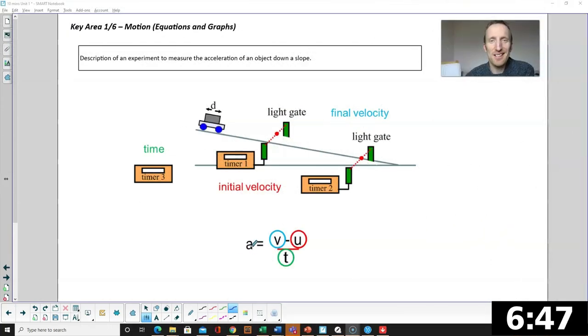Okay an experiment to measure the acceleration object down a slope. To find acceleration you need two velocities and a time. So you can have two light gates to measure your two velocities and a timer to time between the two light gates. If the cart starts from rest your initial velocity is obviously zero and then you only need one light gate to get the final velocity.